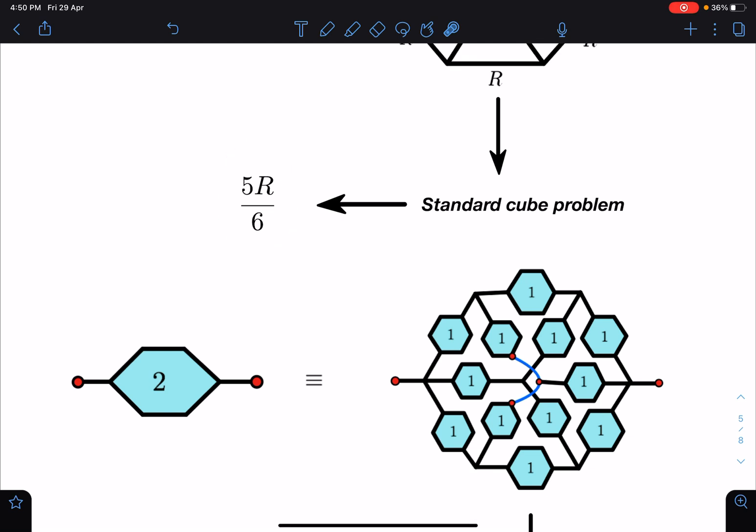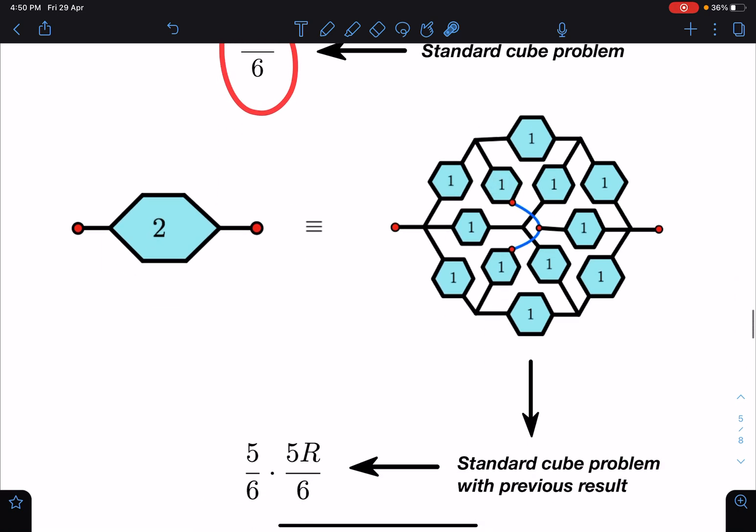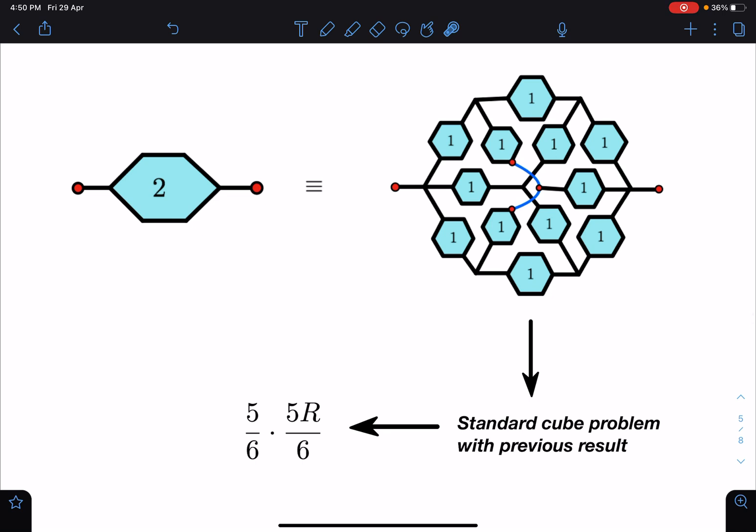So if this answer was 5R by 6, so here it will be 5 by 6 of resistance of this, which is 5 by 6 of 5R by 6. So you can see using the previous result I can write - this value will be 5 by 6 times 5R by 6. The next one if it is written 3 here, that will become 5 by 6 into this resistance, so (5 by 6)³ will come.